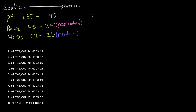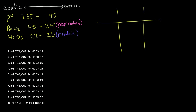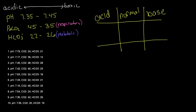Number one — we're going to draw our tic-tac-toe grid. This column is acid, this column is normal, and this is base. We go ahead and look at our first problem: pH is 7.79. It is basic, it is alkalotic, so we write down our pH in the base column.